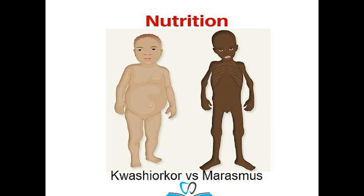These deficiency diseases mainly affect children in the age group of 6 months to 3 years. They often suffer from this type of deficiency disease because if they do not get a proper balanced diet — meaning proteins and carbohydrates — these deficiency diseases occur. Tomorrow we will meet again to learn about more deficiency diseases. Thank you so much.